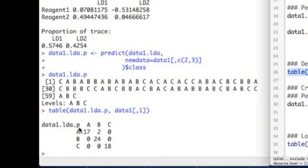And if we look here, data1.lda.p said it was going to be A, and the truth was that it was A 17 times, and that worked correctly. It said it was B two times when it was truly A. B was correctly classified 24 times, and C was correctly classified 18 times. And notice these are misclassifications. Anything on the off diagonal is a misclassification.